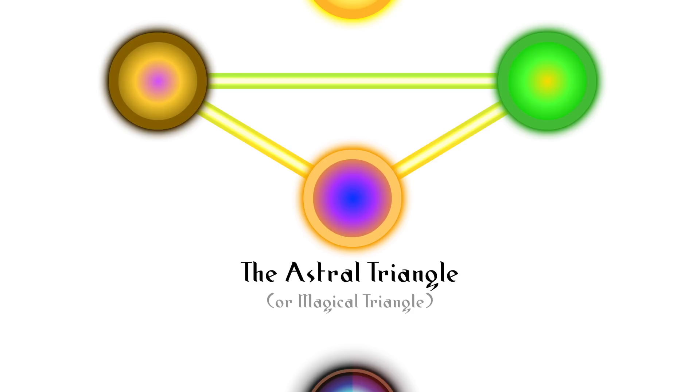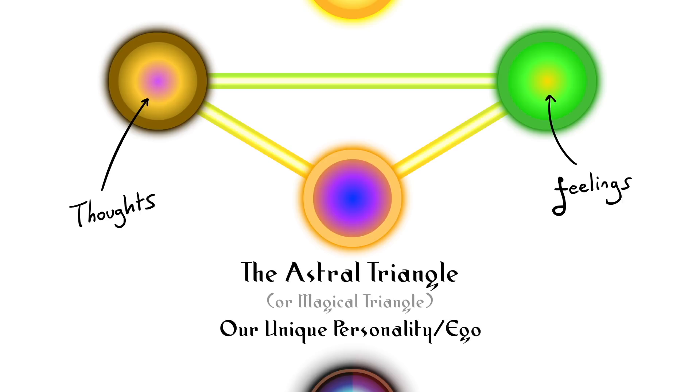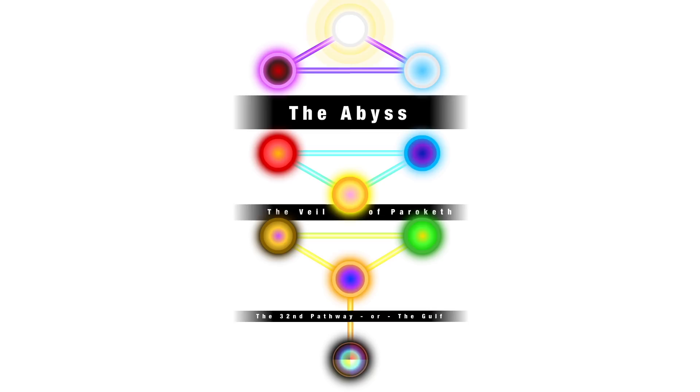The bottommost triangle is the astral or magical triangle, which is the place where our unique egos and personalities are formed. The collective thoughts and feelings of our individual identity combine together and are channeled downwards through our bodies into the bottom Sephira and dictate how we live our lives.